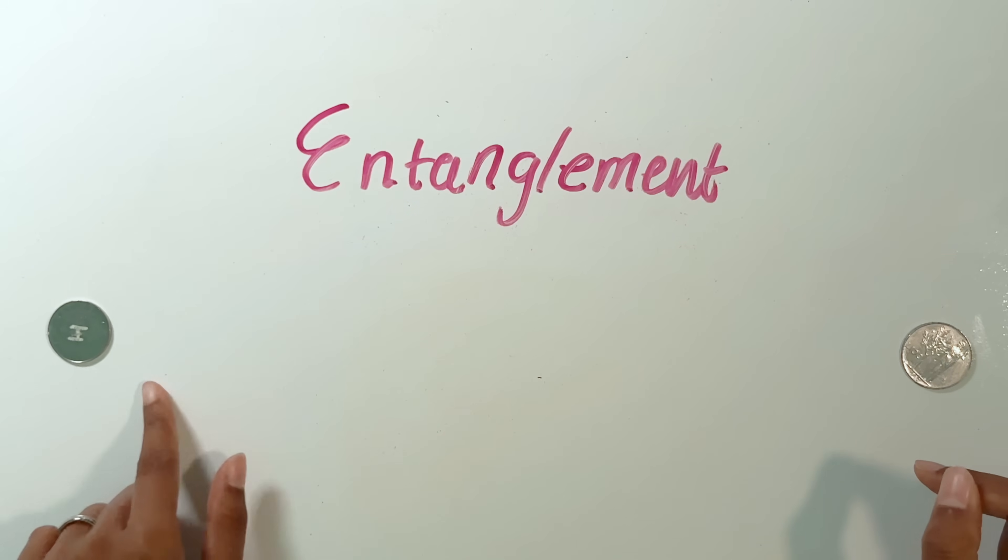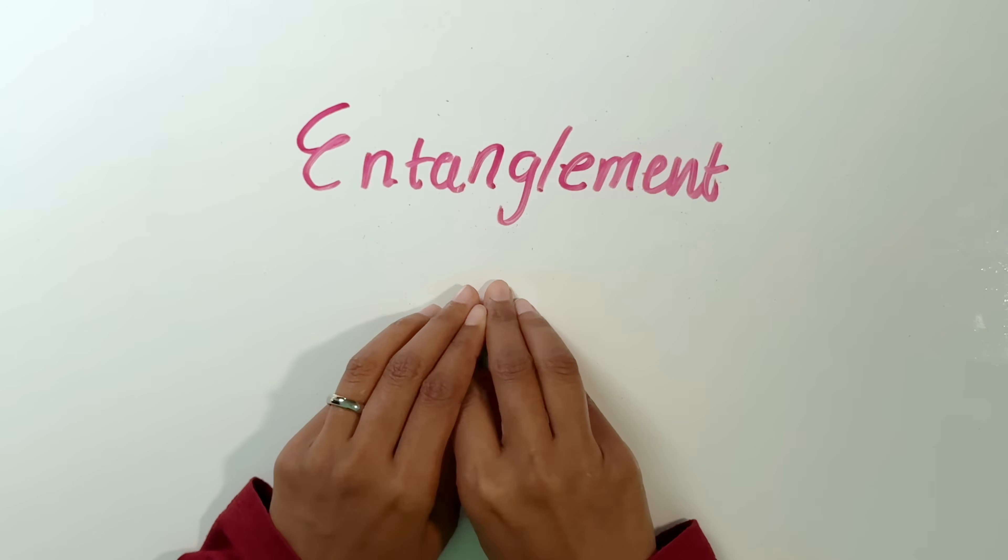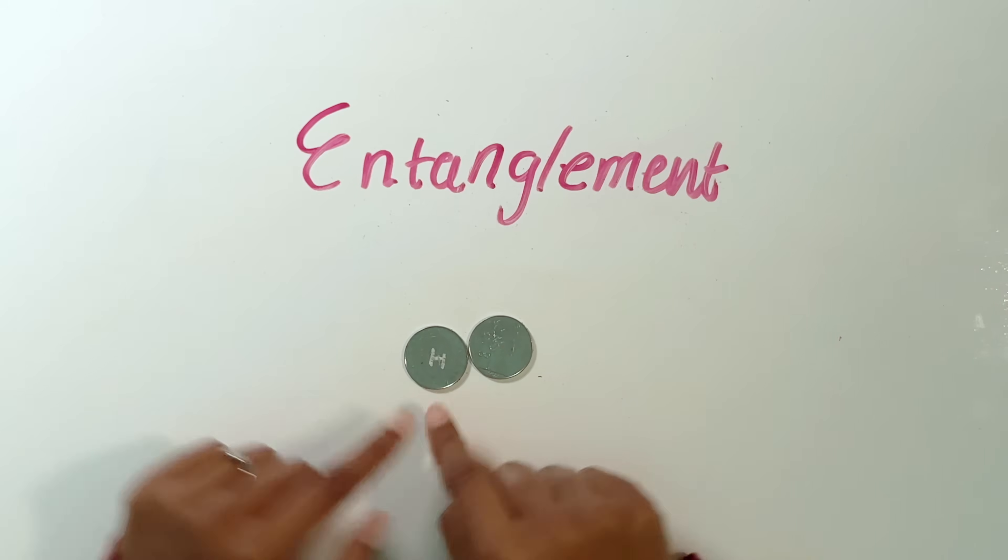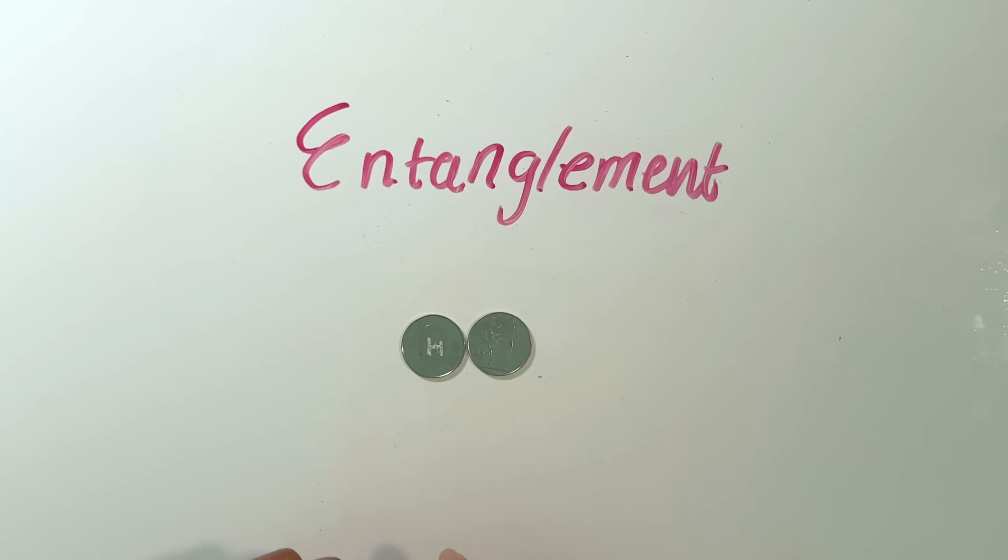Have I just managed to send information from here all the way to here, the other side of the universe, in no time at all? Well, no, there was no real information being sent. What actually happened was that truly at the start, there was a state here. This was heads and this was tails. And their state didn't actually depend on each other. I just thought so because of my own ignorance.